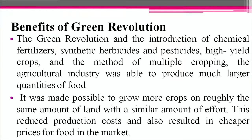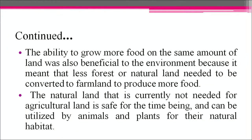The green revolution and the introduction of chemical fertilizers, synthetic herbicides and pesticides, high yielding crops and the method of multiple cropping enabled the agricultural industry to produce much larger quantities of food. It was made possible to grow more crops on roughly the same amount of land with a similar amount of effort, reducing production costs and resulting in cheaper food prices. The ability to grow more food on the same land was also beneficial to the environment, as less forest or natural land needed to be converted to farmland.